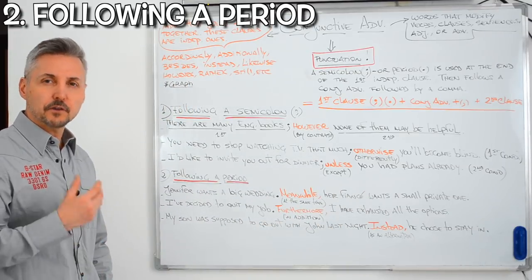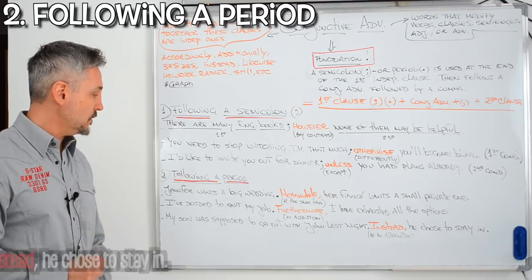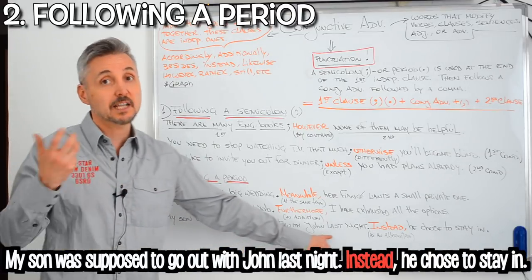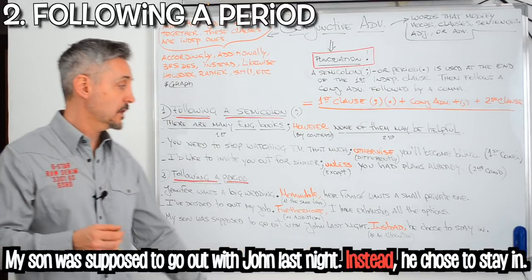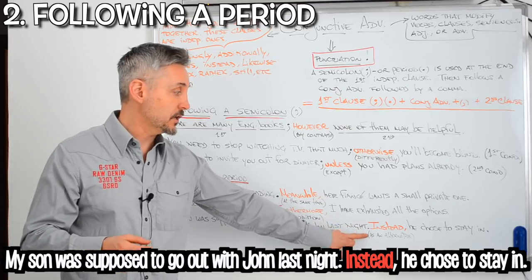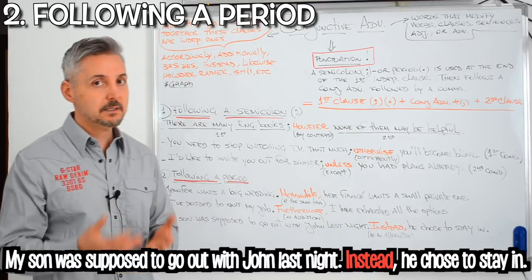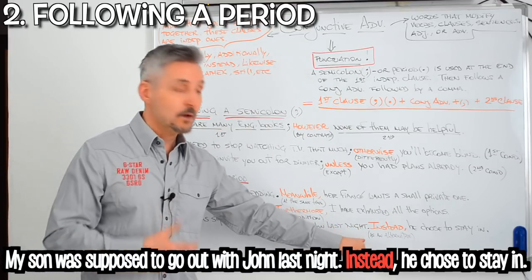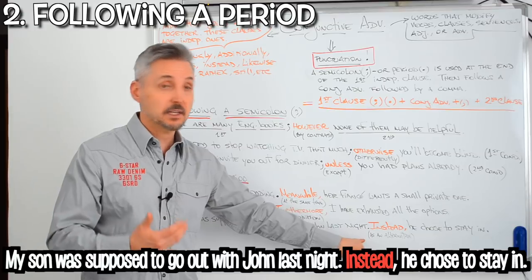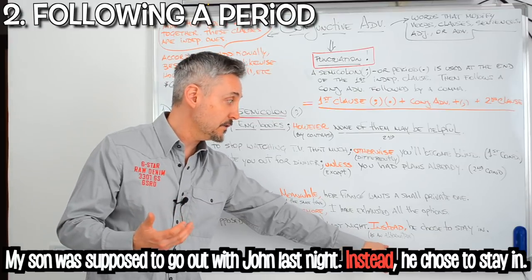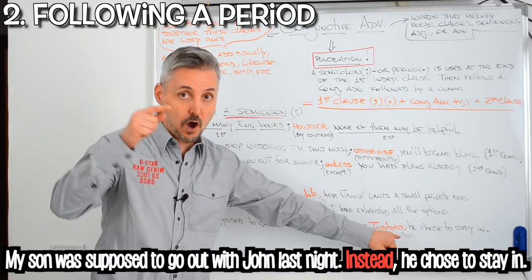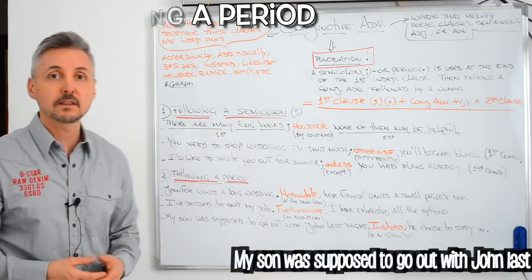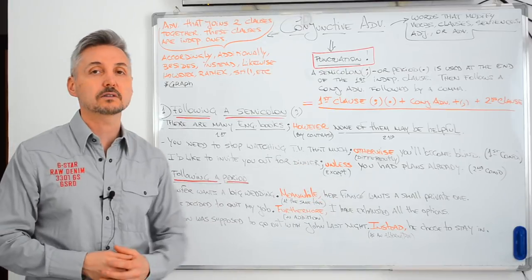And for the last example: 'My son was supposed to go out with John last night. Instead, he chose to stay.' 'Instead' is the conjunctive adverb, which means 'as an alternative', followed by a comma, and 'he chose to stay' is the second clause.